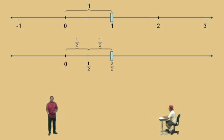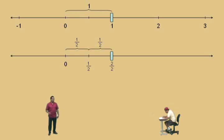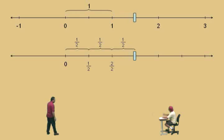One-half plus another half is two halves. It's like saying if you have one apple and somebody gives you another apple, how many apples do you have? Two apples — one apple plus another apple is two apples; one-half plus another half is two halves. Let's add another half. How many halves do we have now? Three halves.